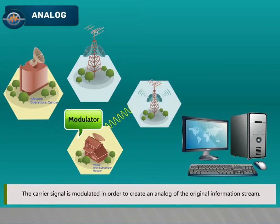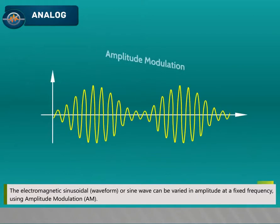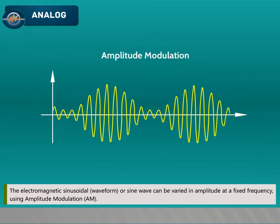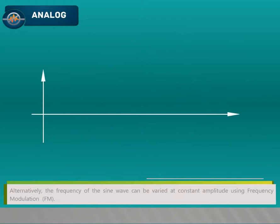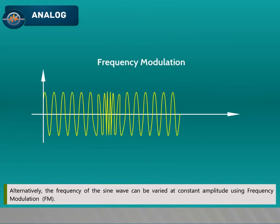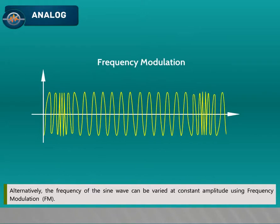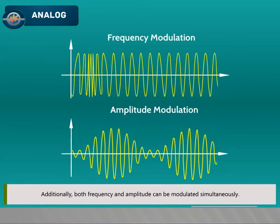The carrier signal is modulated to create an analog of the original information stream. The electromagnetic sinusoidal waveform or sine wave can be varied in amplitude at a fixed frequency using amplitude modulation (AM). Alternatively, the frequency of the sine wave can be varied at constant amplitude using frequency modulation (FM). Additionally, both frequency and amplitude can be modulated simultaneously.